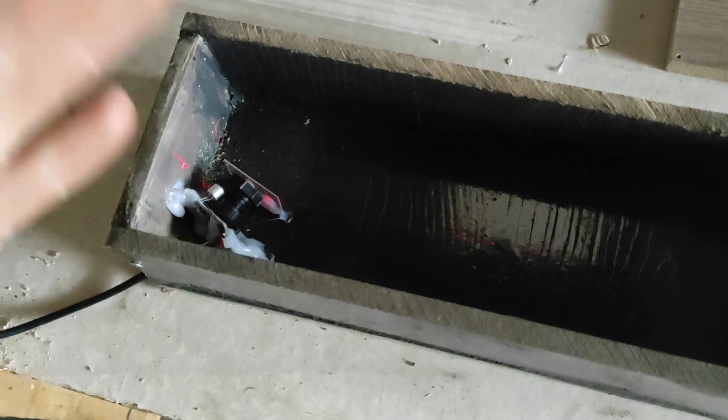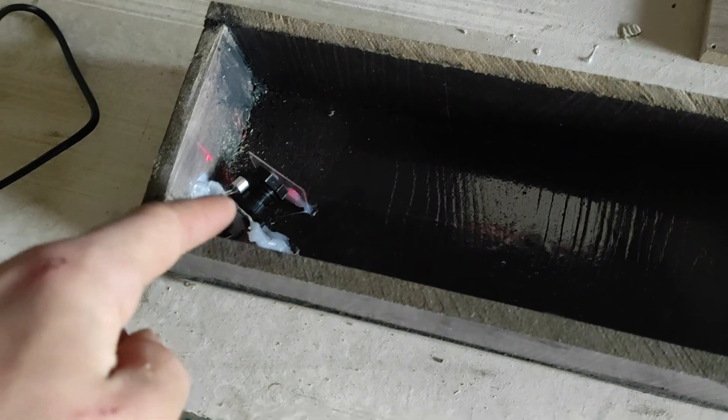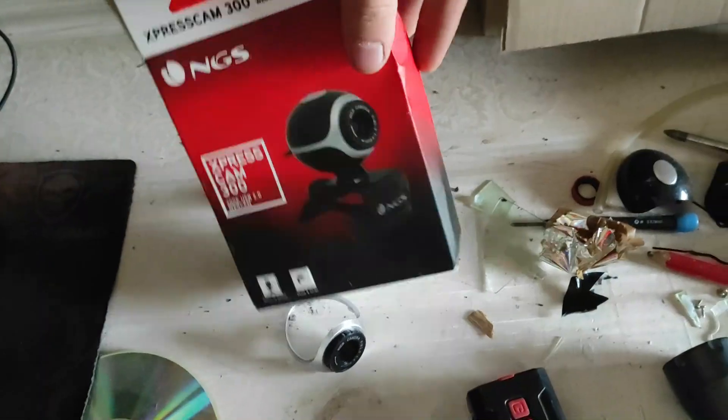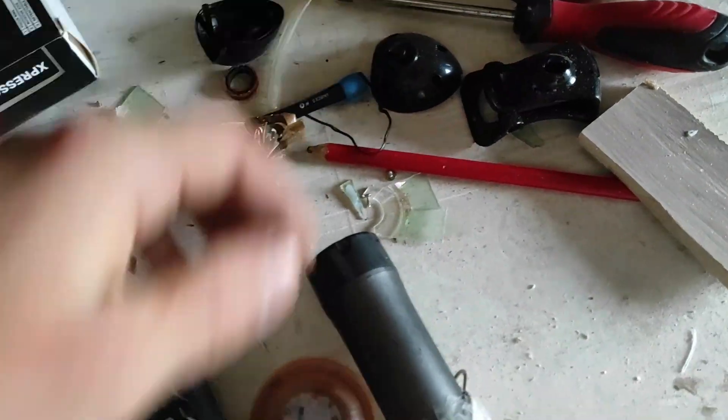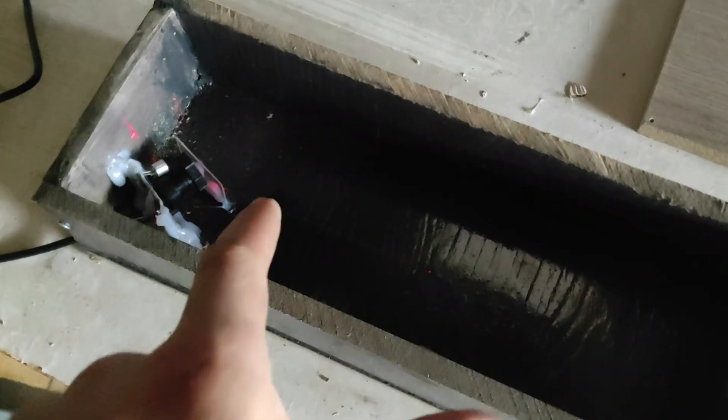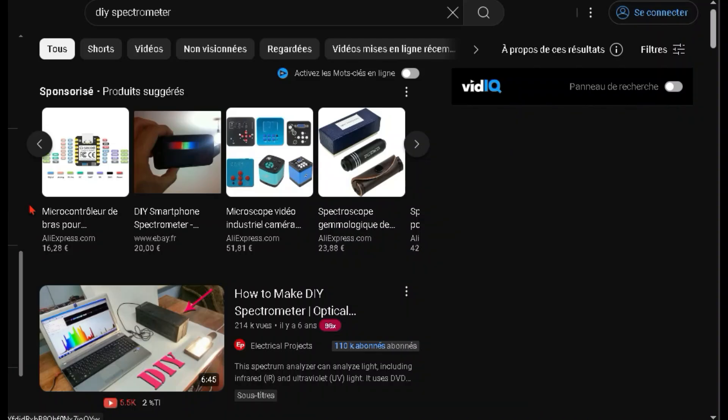Then to receive the rainbow, we need a light detector. So I bought a cheap laptop camera on Amazon and I removed the plastic casing. And finally, you need the box to put everything inside. I'm not going to detail the construction further though, because there are lots of good tutorials on YouTube.